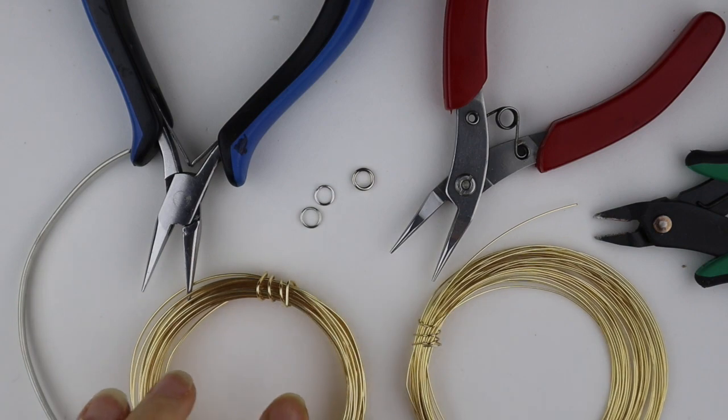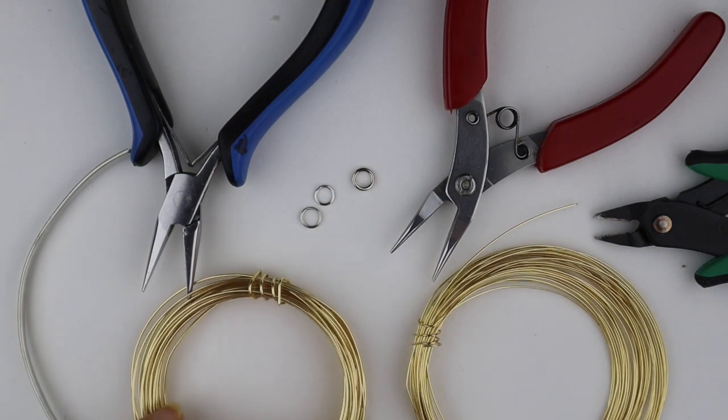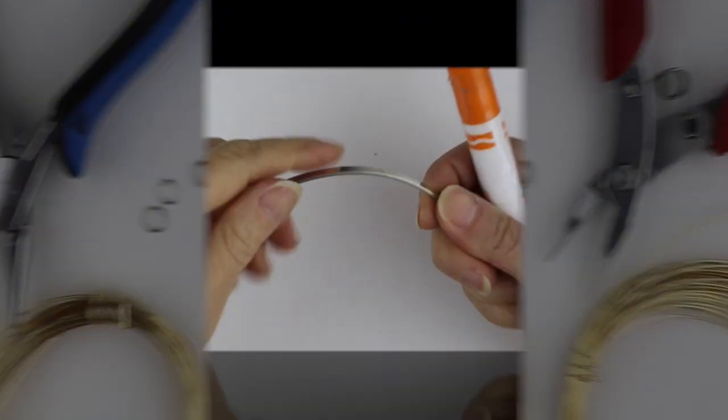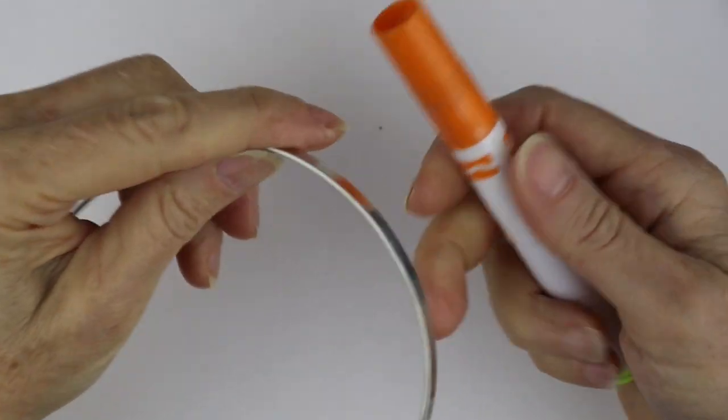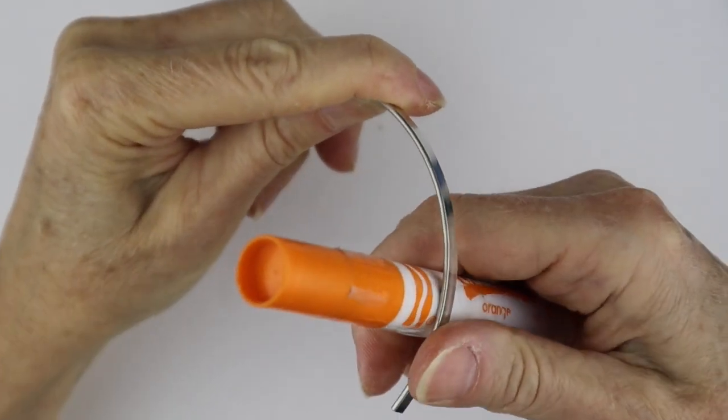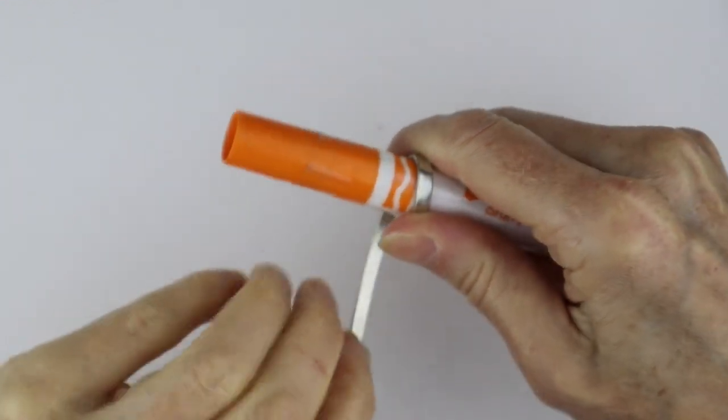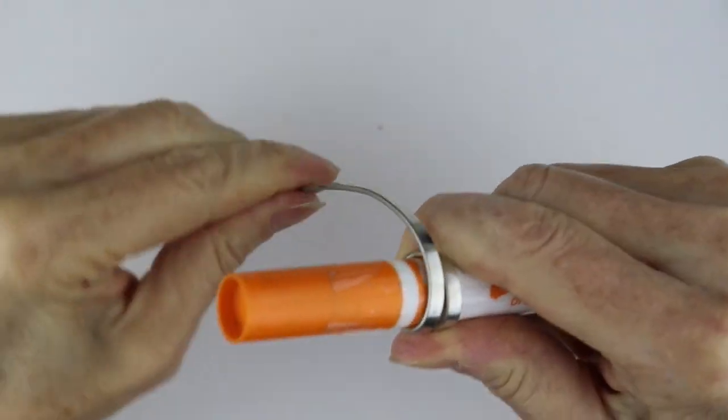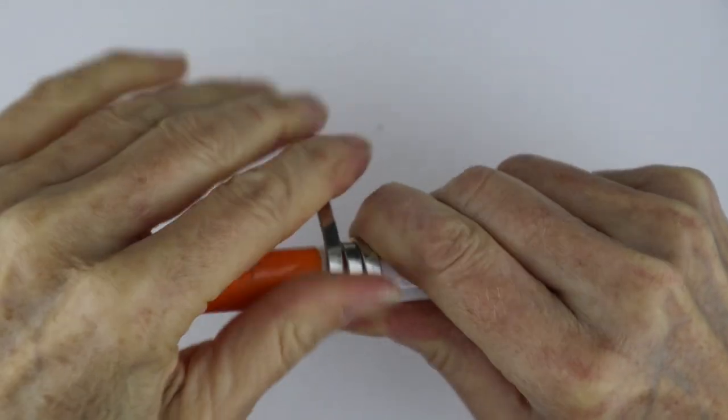So I'm going to use 24 gauge and 20 gauge, and you're going to need your tools. You're going to take your flat wire and wind it around a sort of cylinder form. I'm just going to use this Crayola marker—it seems to be a good size for my fingers. We're just going to wrap it around a couple of times like that.